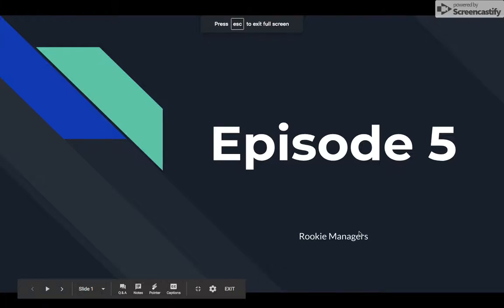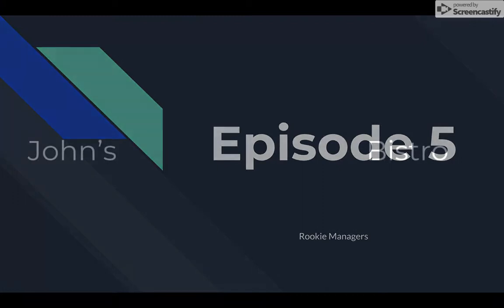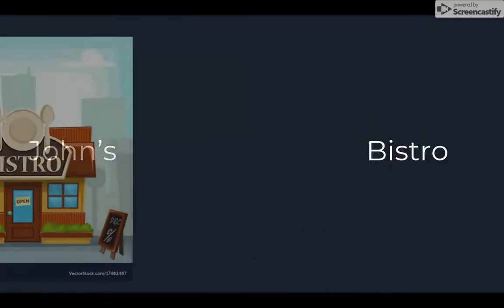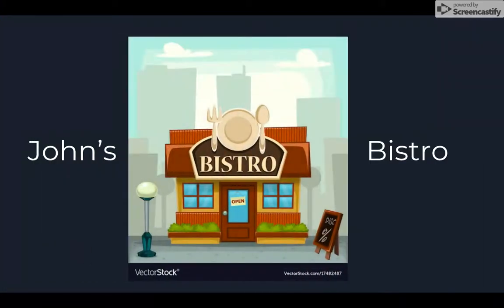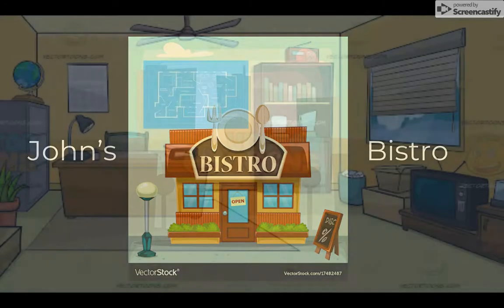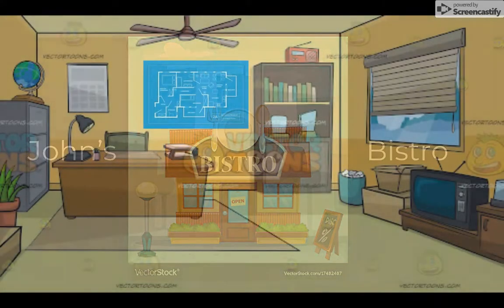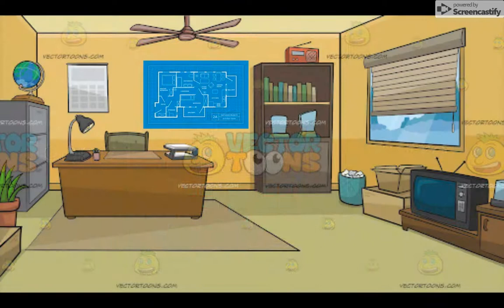Welcome back to John's Bistro. This is episode 5. In the past episodes, John's Bistro has been using differentiation to help the Bistro tremendously in moving forward with their plan. Differentiation is the process of breaking down goals for the company into sub-goals and having employees with specialized skills carry out those tasks.